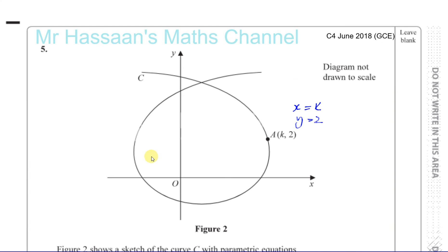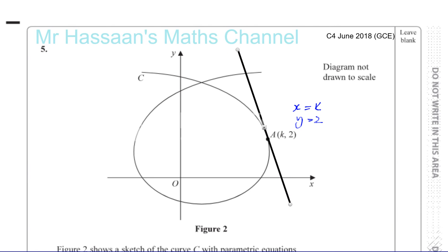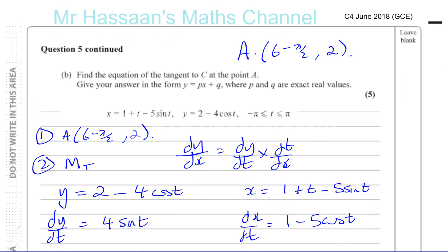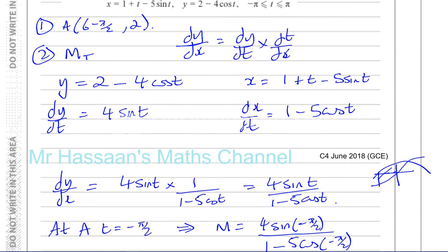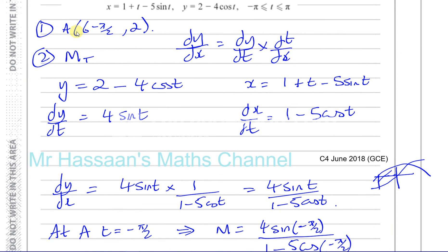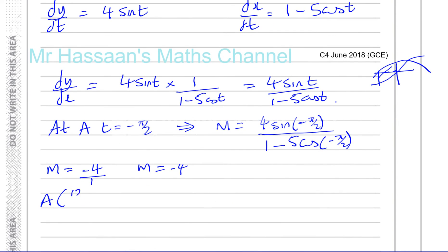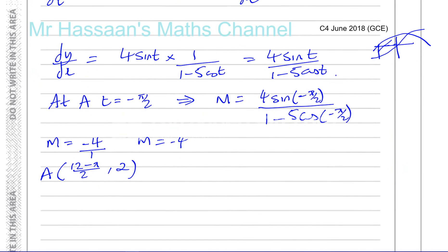Let's check if that seems sensible: looking at the sketch, if you drew a tangent at point A it's going to be quite steep and in the negative direction, so a gradient of minus four looks about right. Point A has x equals six minus pi over two, which we can also write as twelve minus pi all over two, and y equals two.